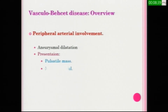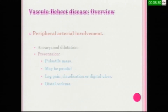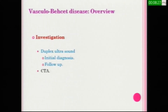In case of peripheral arterial involvement, presentation is usually with a pulsatile mass which may be painful, leg pain, claudication, digital ulcer, or distal edema. To investigate Behçet's Disease, we usually use duplex ultrasound or CT angiography to diagnose vascular Behçet.